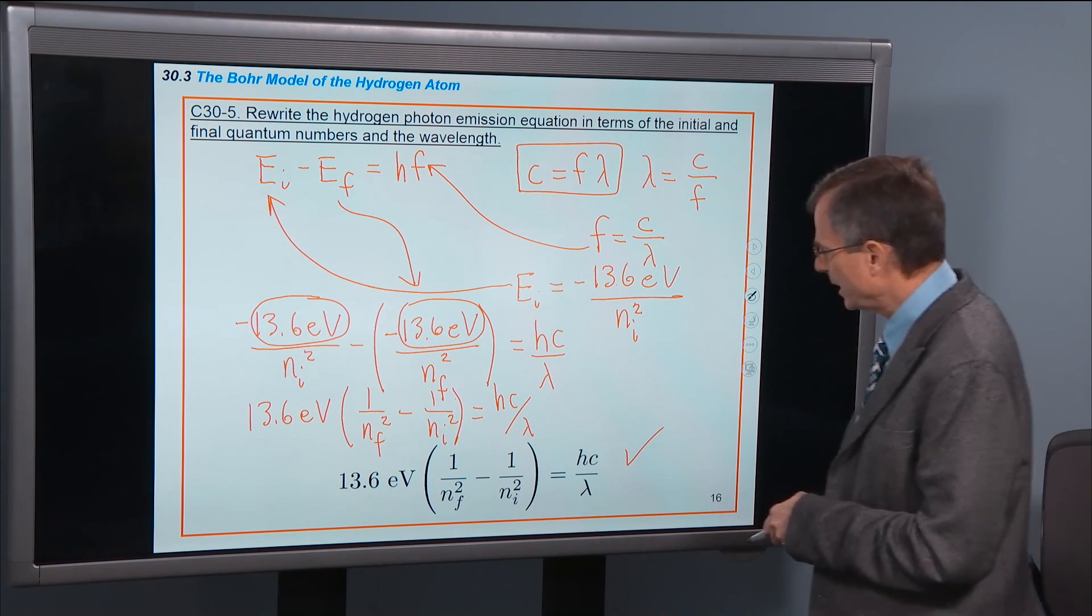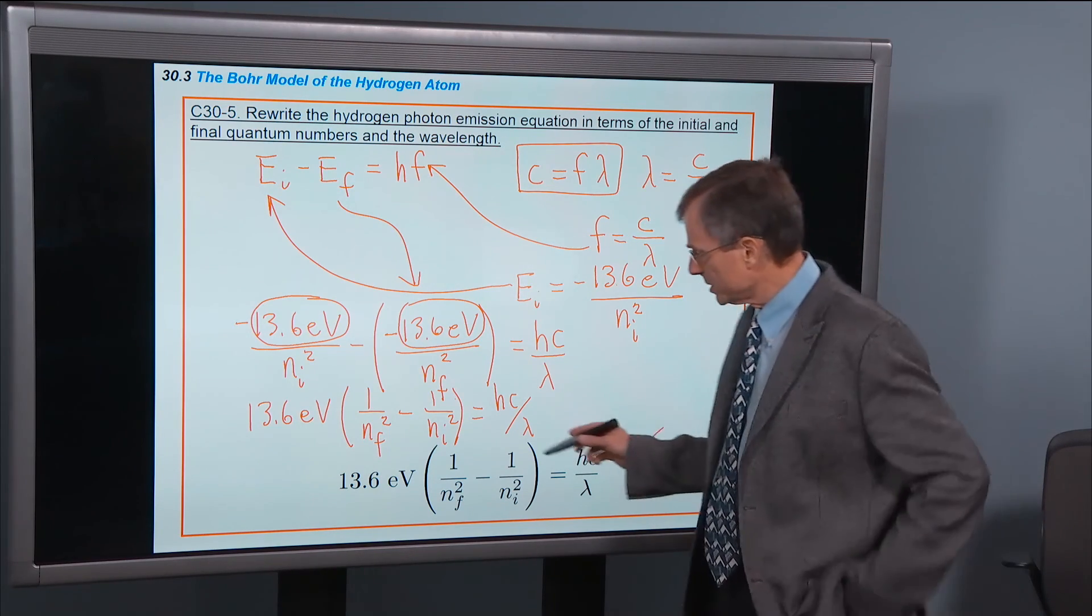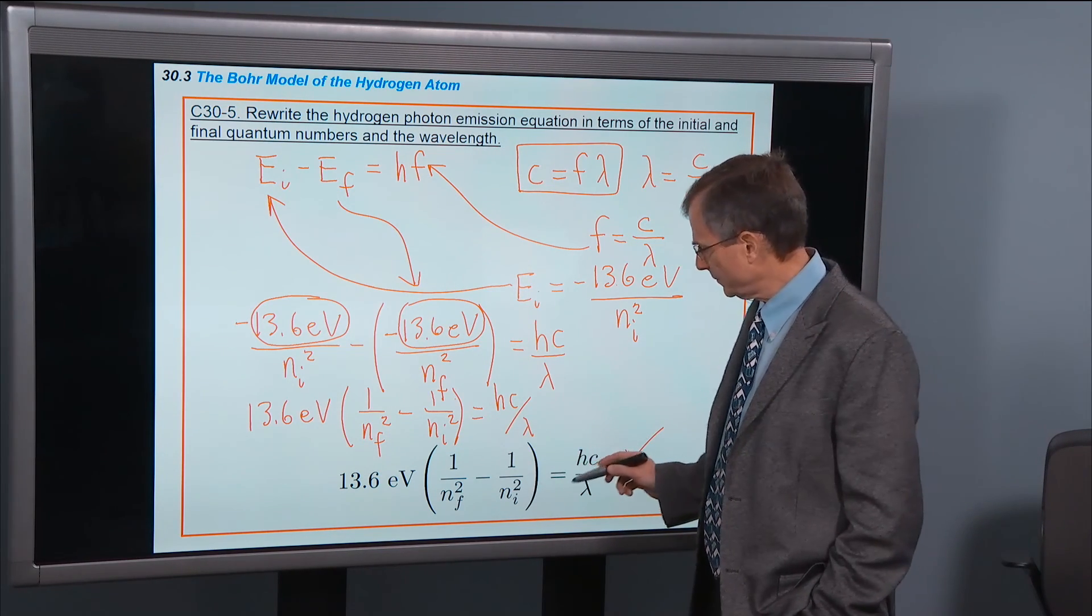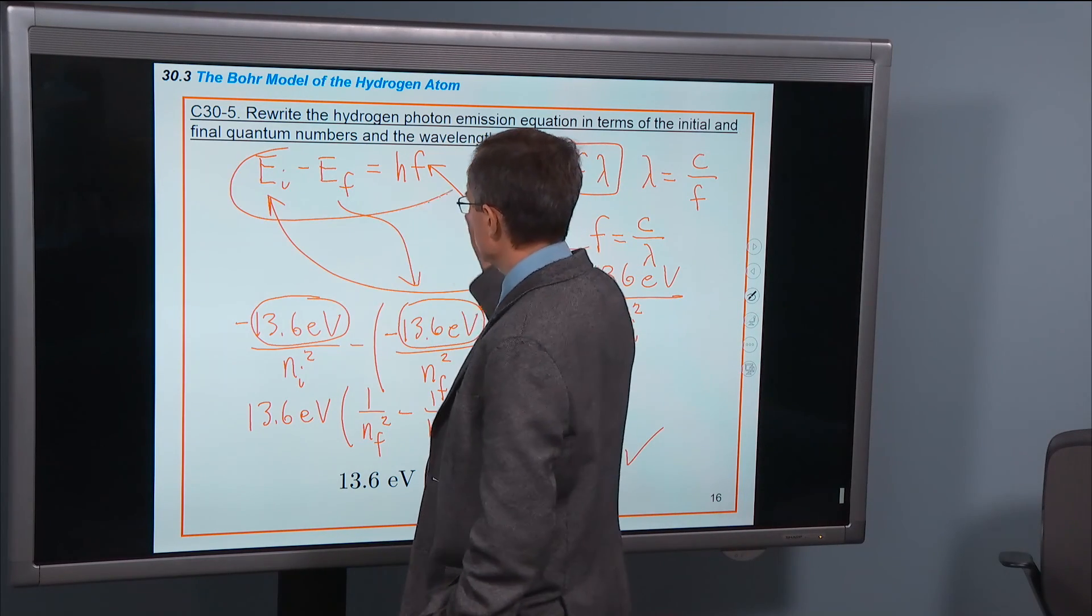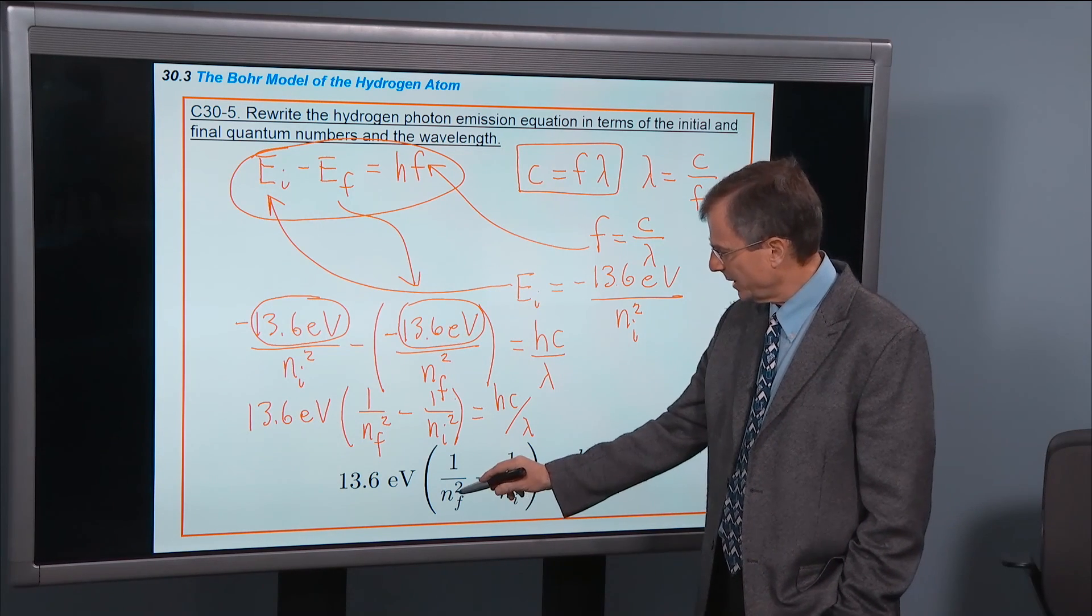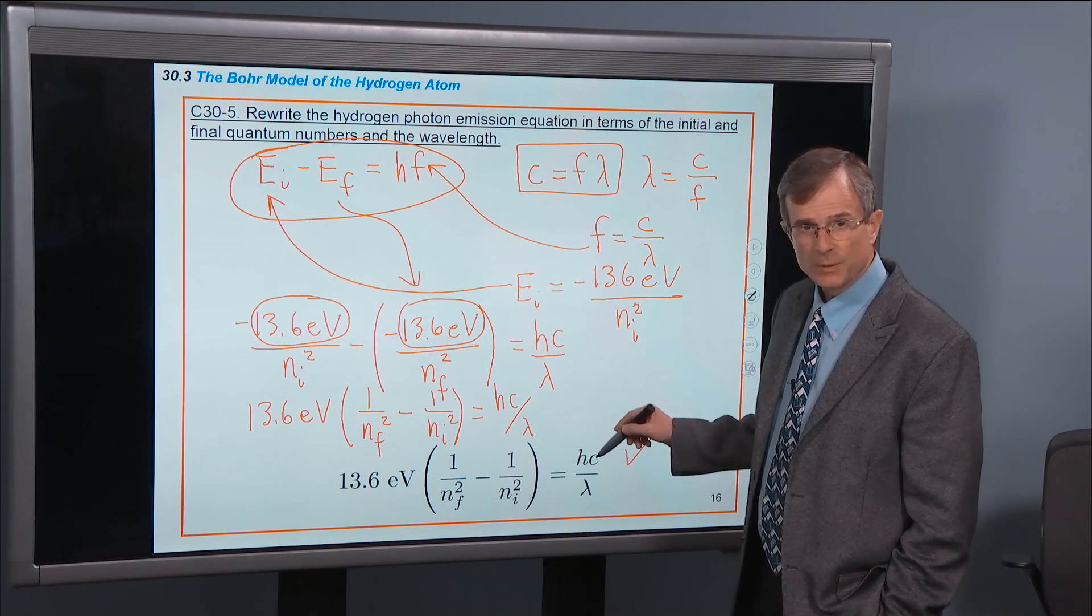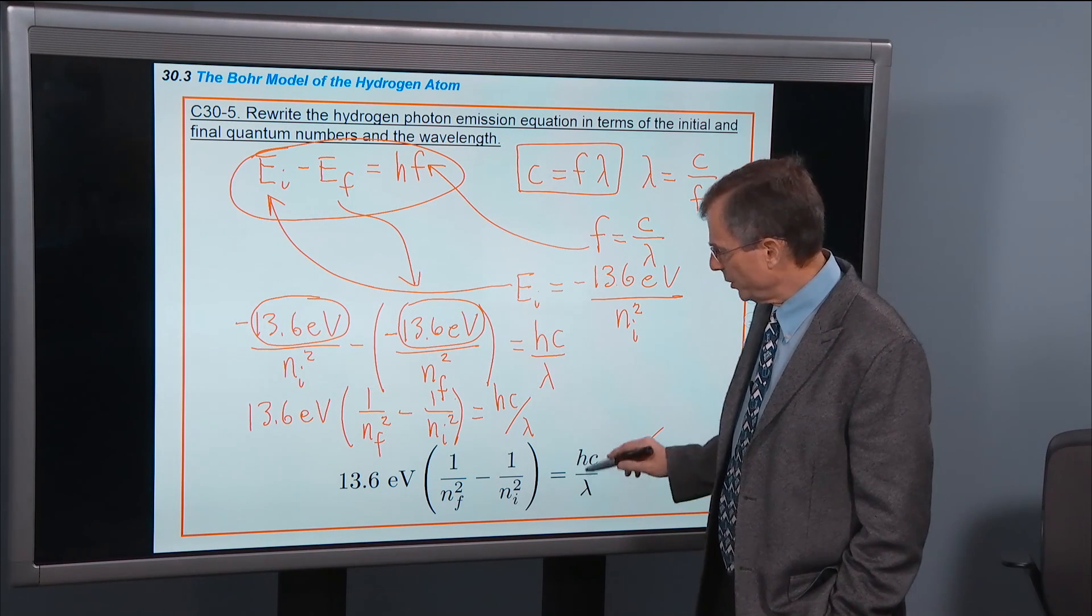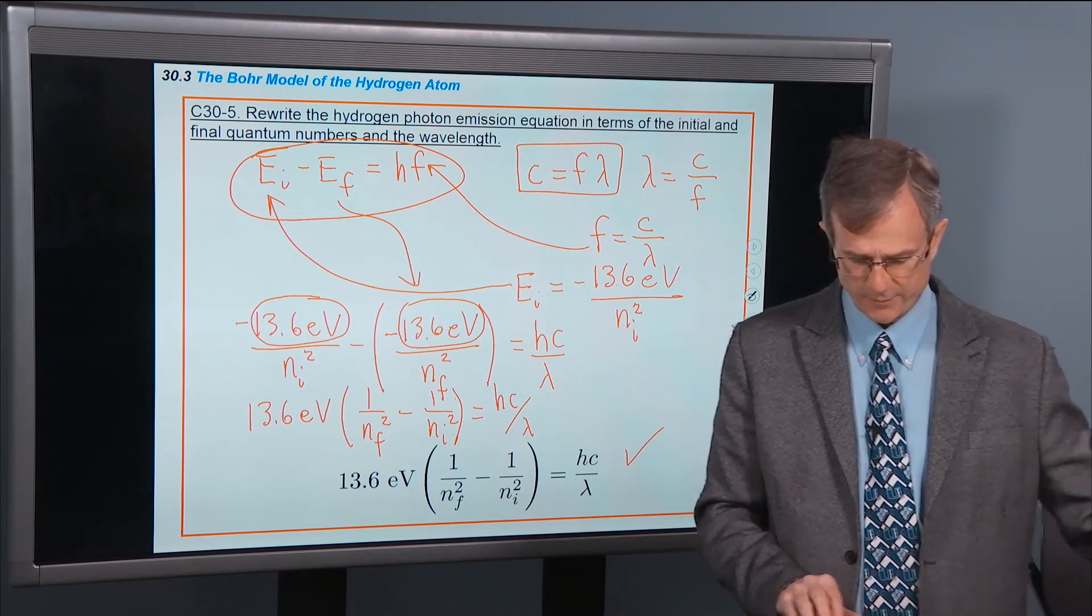So that was the objective of this concept. The reason for doing that is that in doing a lot of the problems in the homework, as well as in working the lab, this will be a more convenient form of the equation than this. So if I tell you what n final is and what n initial is, you know what h is, you know what c is, you can find the wavelength, which is typically the way these problems will go, is to try and find the wavelength.